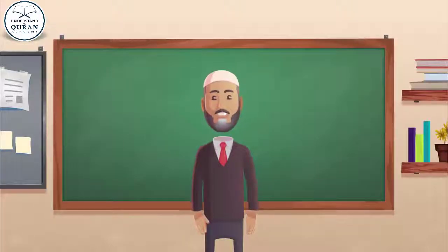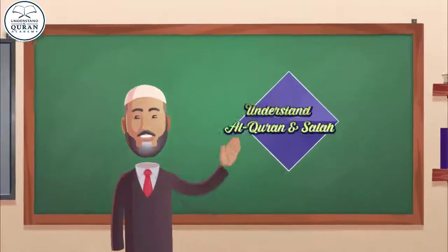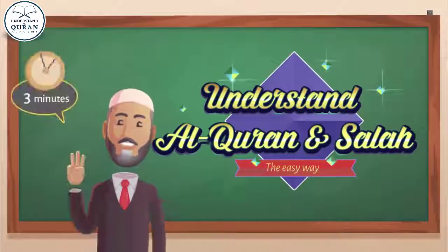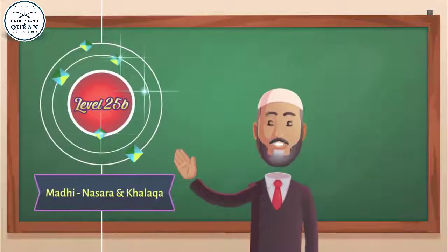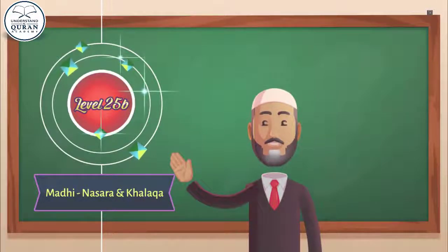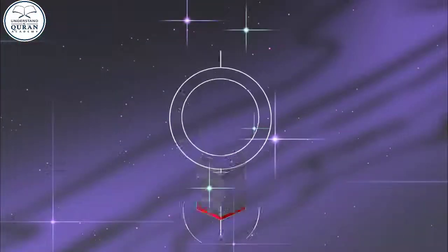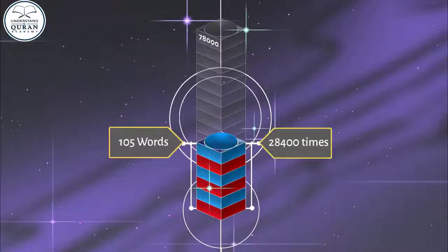Bismillah. Alhamdulillah. Salatu wassalamu ala rasoolillah. Understand Quran and Salah the easy way, 3-minute series, lesson number 25b, in which we will study the Madhi or perfect tense forms for two verbs: Nasara and Khalaqa. By the end of this lesson we will learn 105 words which occur almost 28,400 times in the Quran.